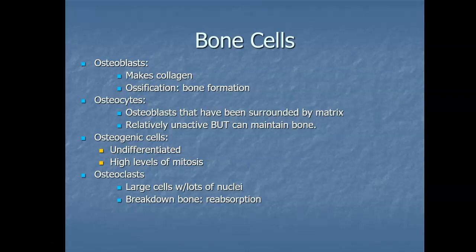Bone contains a relatively small number of cells embedded in a matrix of collagen fibers. Those fibers provide a surface for inorganic salt crystals to attach to. These salt crystals are formed when calcium phosphate and calcium carbonate join together to create a compound called hydroxyapatite, which crystallizes on the fibers surrounding the bone cells. These crystals give bone its hardness and strength.